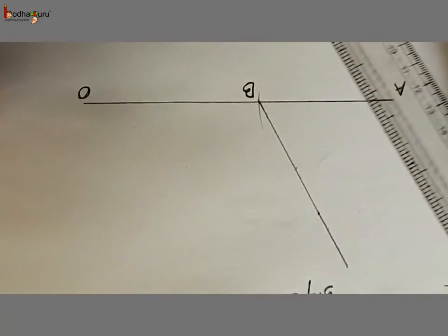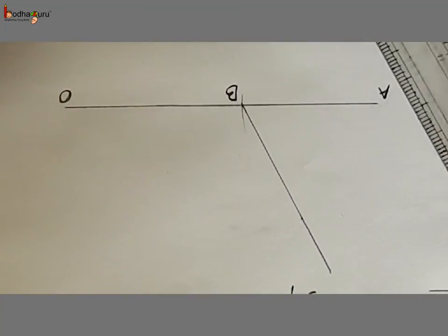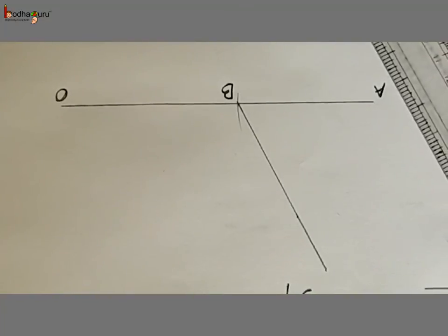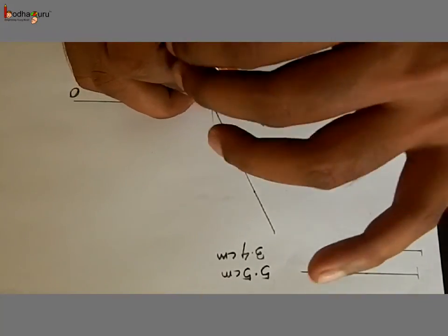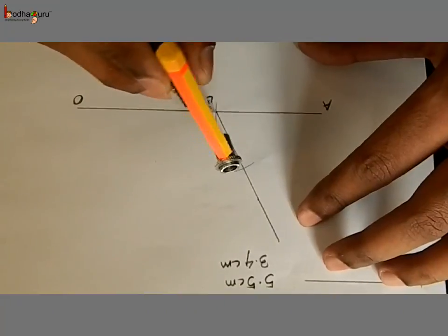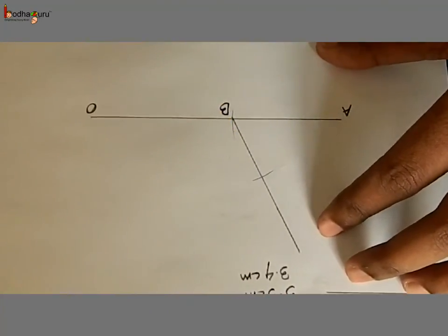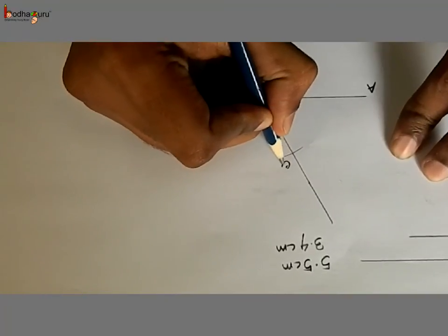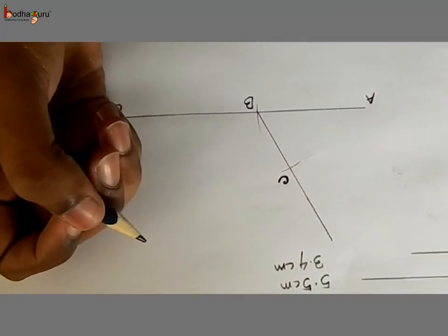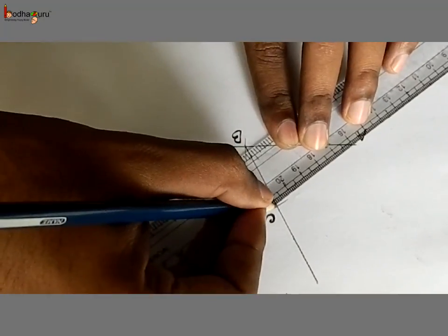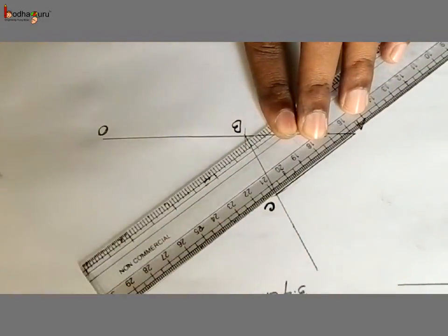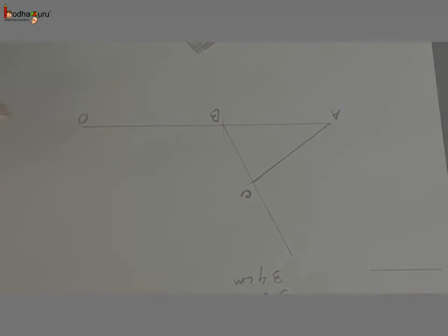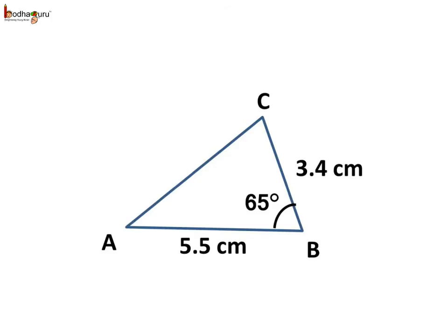This arm BC is going to be 3.4 cm, so we cut off 3.4 cm using a compass. Take the measurement of 3.4 cm with the compass, put the needle on point B, and draw a little arc which cuts the arm of the angle. This point is point C, and we get BC equal to 3.4 cm. Now we join A to C to complete the triangle. We have drawn triangle ABC with the two given sides and the included angle.